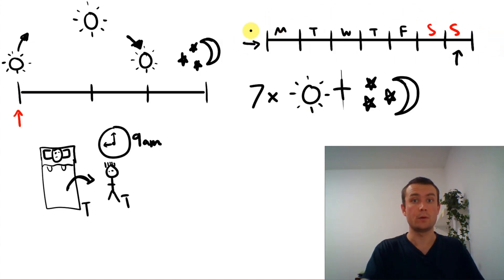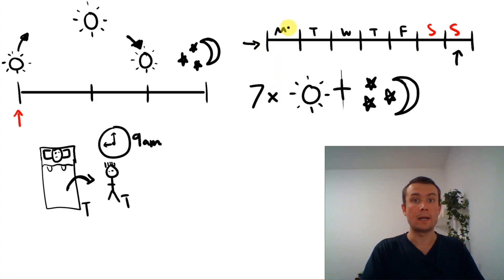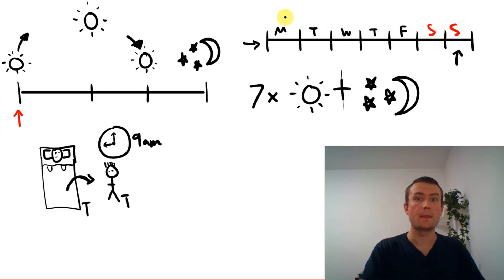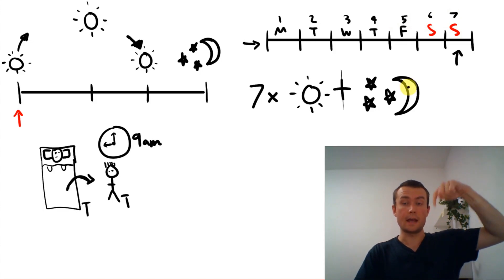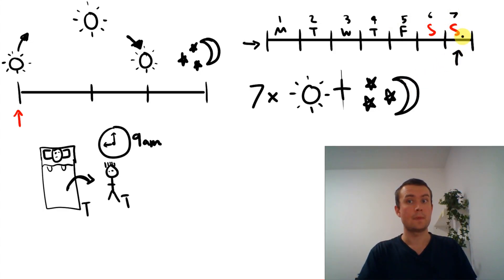This is a week. It has seven days: Monday, Tuesday, Wednesday, Thursday, Friday, Saturday and Sunday. One, two, three, four, five, six, seven. Today is Sunday — the seventh day of the week.